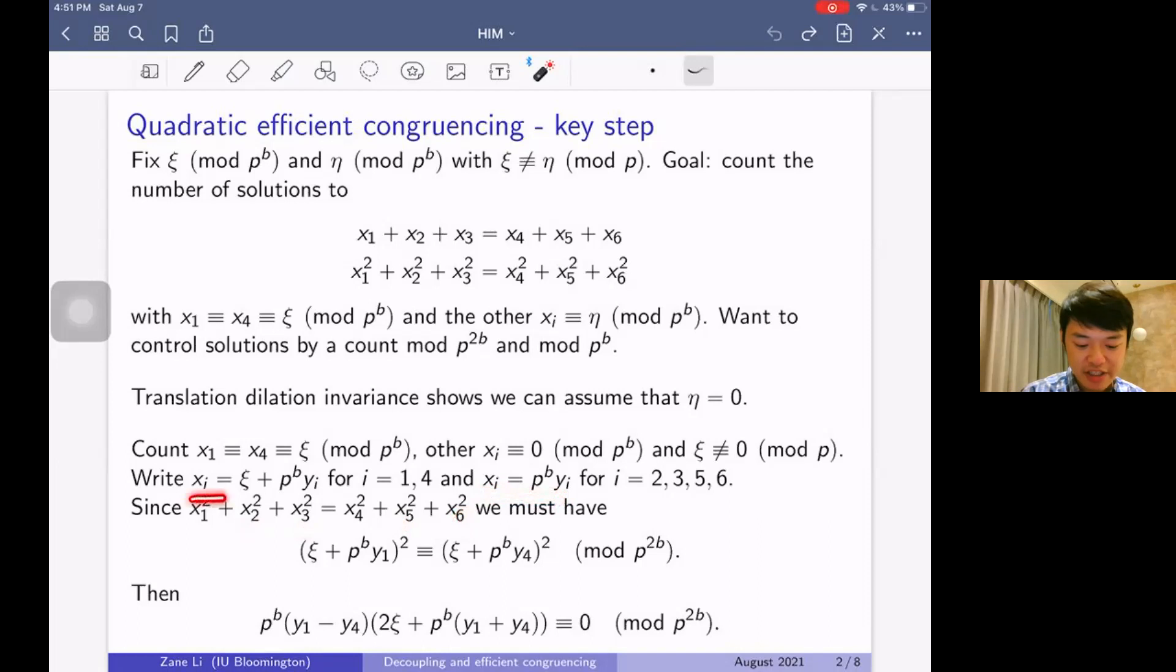Once we do that and insert the definition for x_1 and x_4, we get this system. Then we do difference of squares and expand, and we get that this is p^b(y_1 - y_4) times this expression; this must equal zero mod p^{2b}. Now let's use the condition that ζ is not zero mod p. Then ζ is not zero mod p, so this expression is not divisible by p. Therefore, all 2b powers of p over here must divide this p^b(y_1 - y_4) expression.